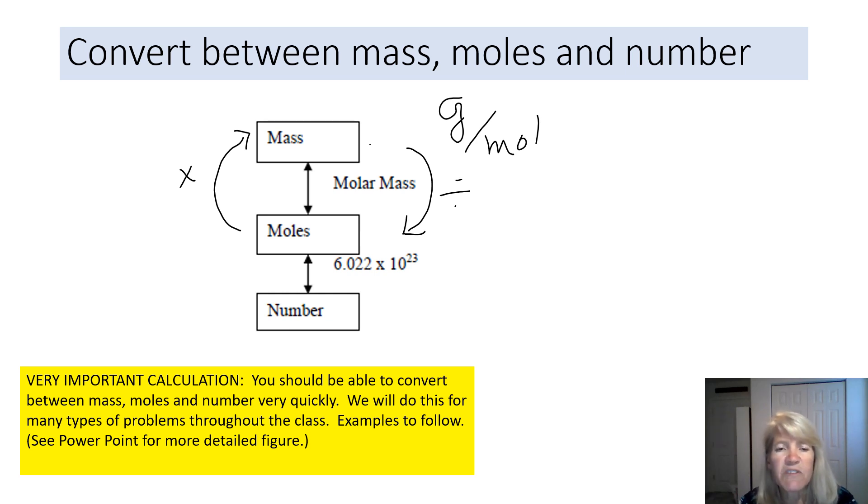Now if you need to go from moles to number, it's Avogadro's number. To go from moles to number, you'll multiply by Avogadro's number. To go from number to moles, you'll divide by Avogadro's number. And so remember, the units on Avogadro's number are items, so atoms or molecules per mole. So let's say it's atoms per mole. So you can see how that converts between moles and numbers. So these are the conversions we're going to do. And I'm going to show you, we're going to use unit analysis.